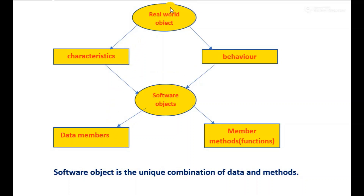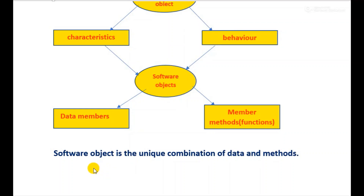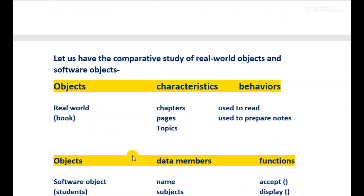We can understand this concept with the help of a diagram. Here the real world object contains behavior, and in a software object this behavior is referred to as member methods or functions. Real world objects also contain characteristics, and in a software object these characteristics are referred to as data members. A software object is the unique combination of data and methods.